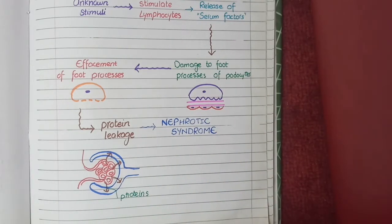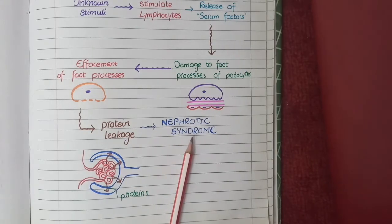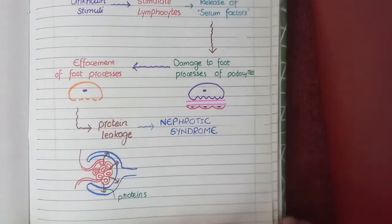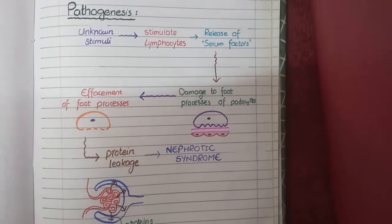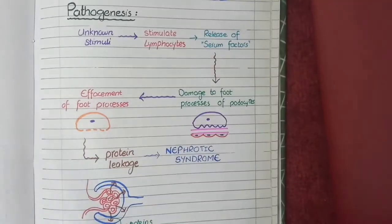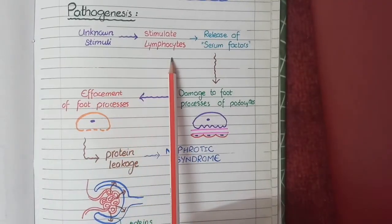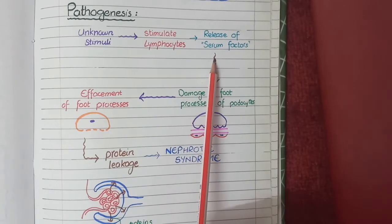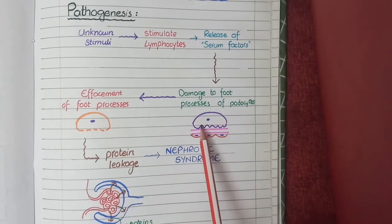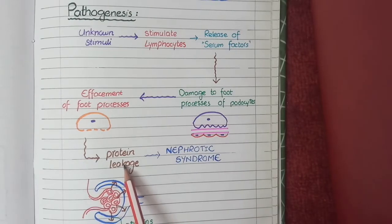The combination of proteinuria, hypoproteinemia, edema, and hyperlipidemia is called nephrotic syndrome. To review the pathogenesis briefly: in minimal change disease, idiopathic factors stimulate lymphocytes to release serum factors that damage the foot processes of podocytes, resulting in proteinuria and nephrotic syndrome.